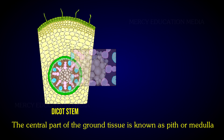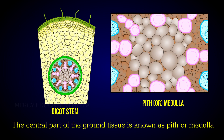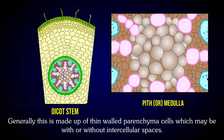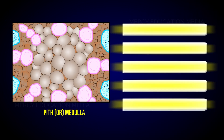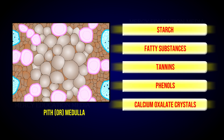The central part of the ground tissue is known as pith or medulla. Generally, it is made up of thin-walled parenchyma cells which may be with or without intercellular spaces. The cells in the pith generally store starch, fatty substances, tannins, phenols, calcium oxalate crystals, etc.